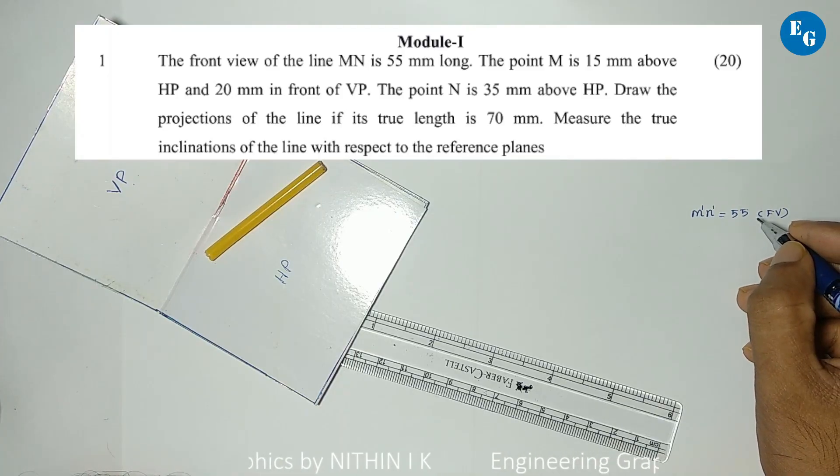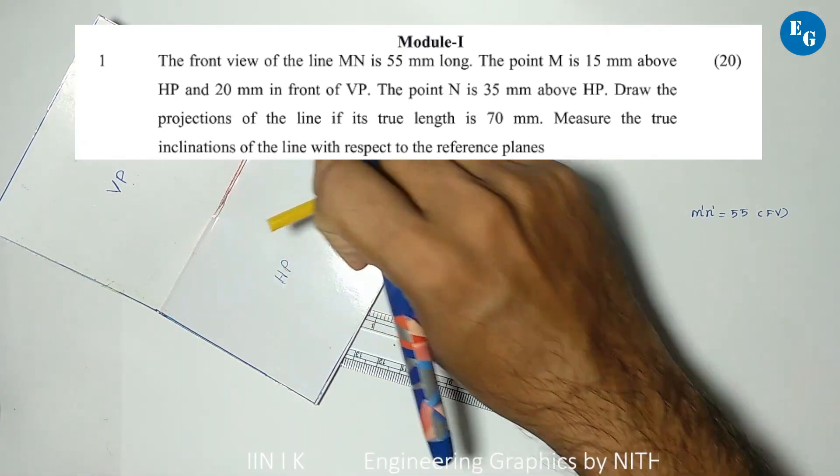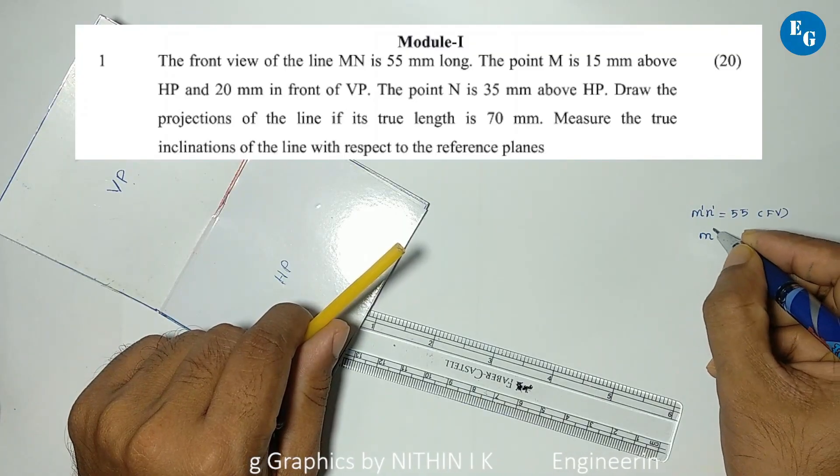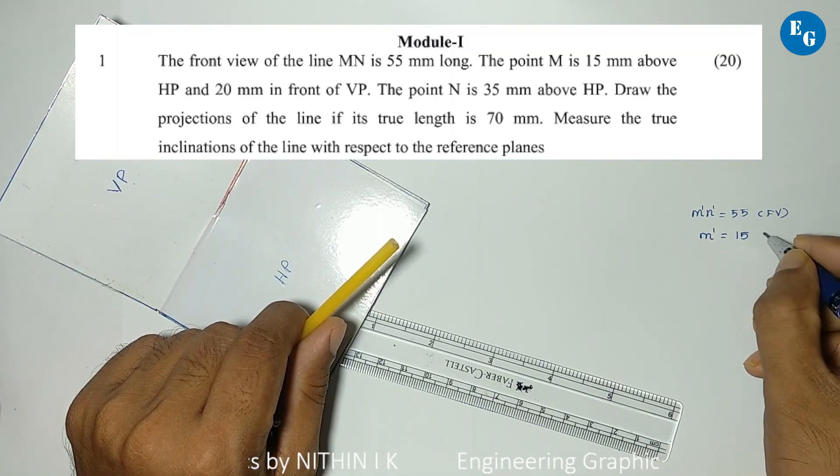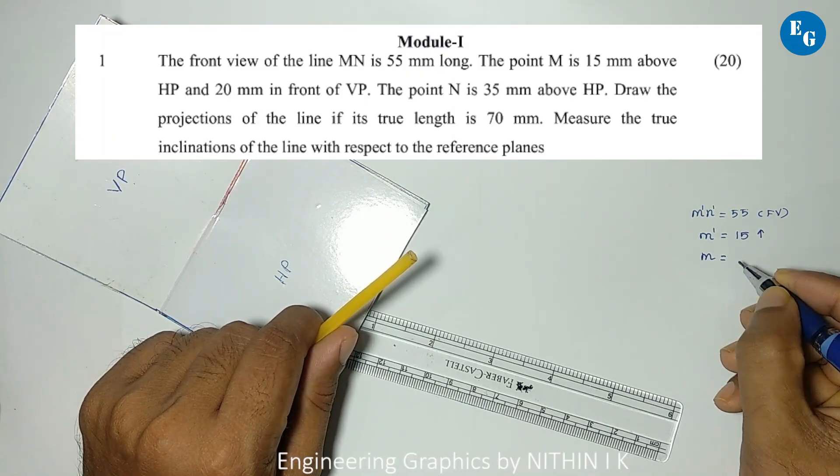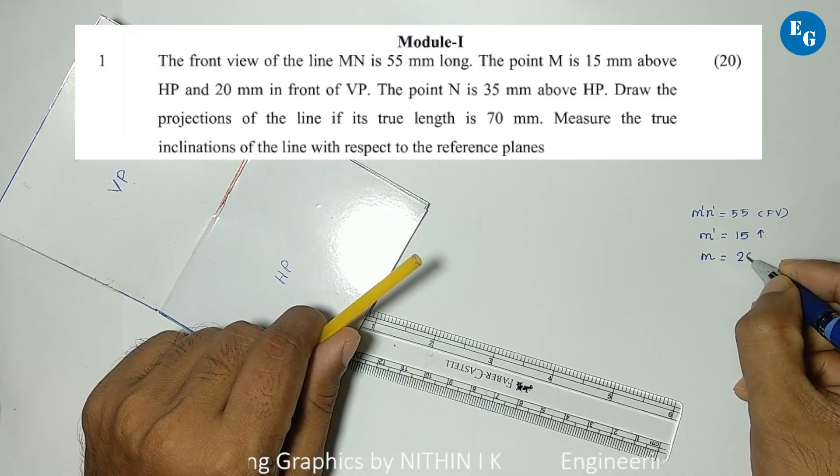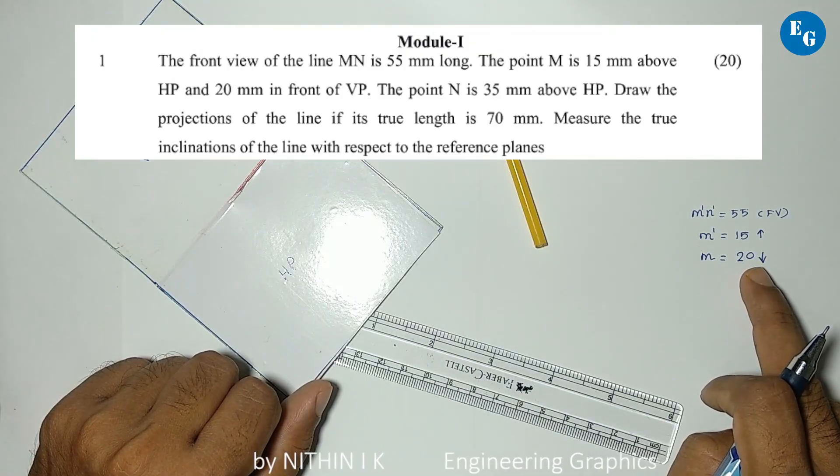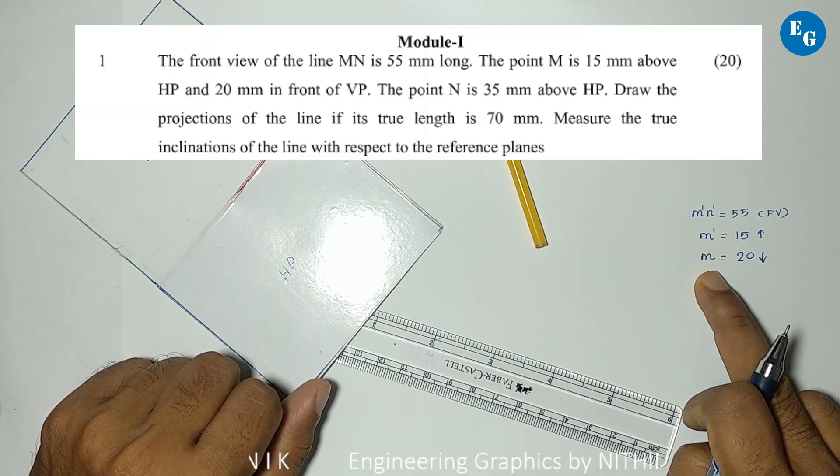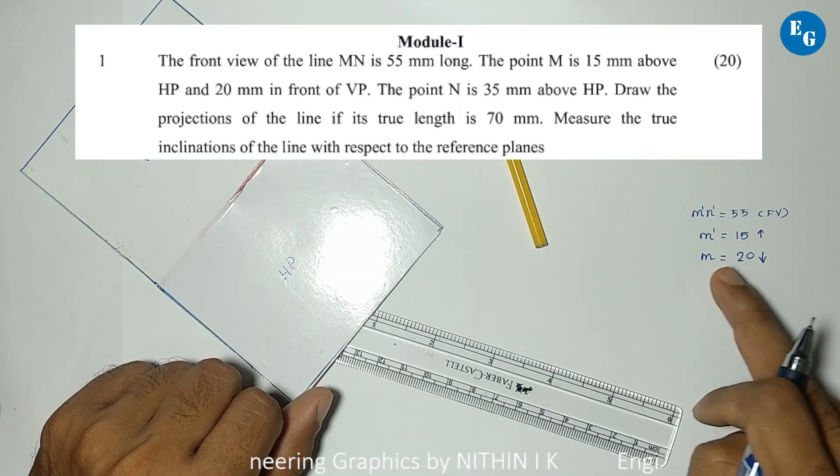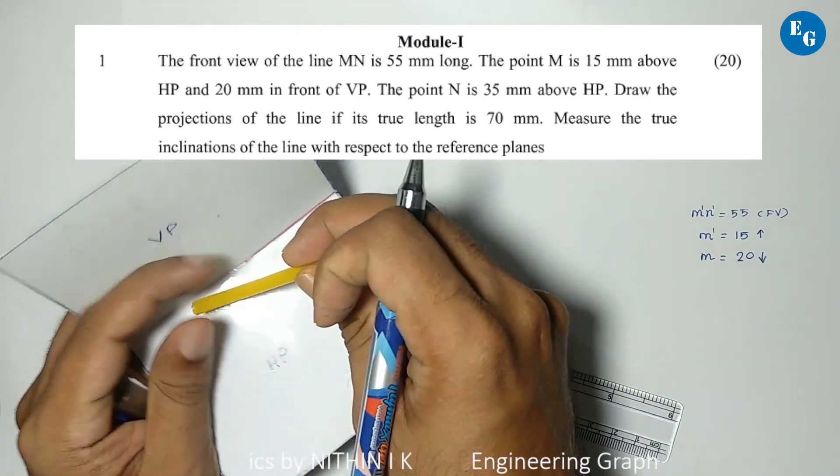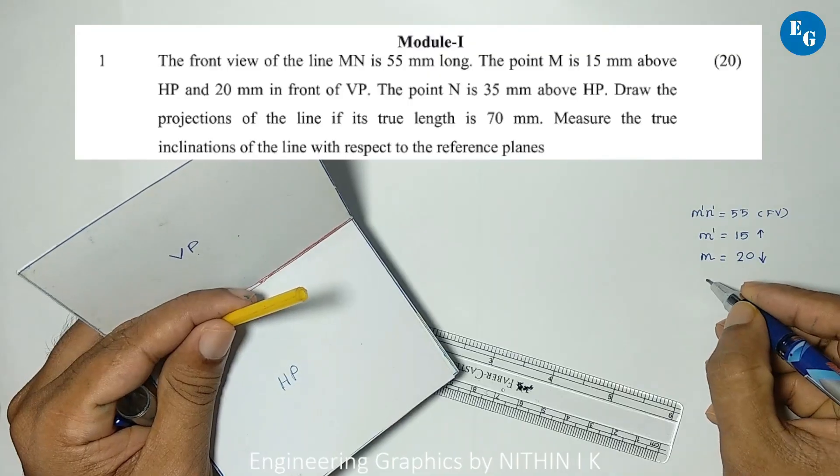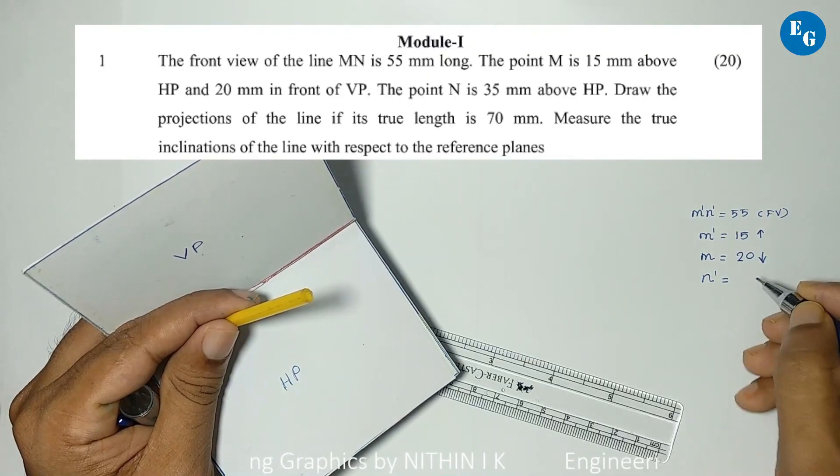The point M is 15mm above HP. The point N is 35mm above HP, meaning the distance with respect to HP is 35mm for N dash. N dash equals 35mm.